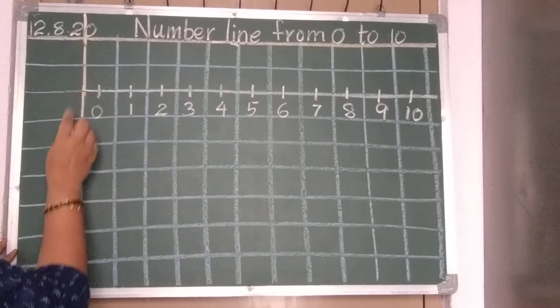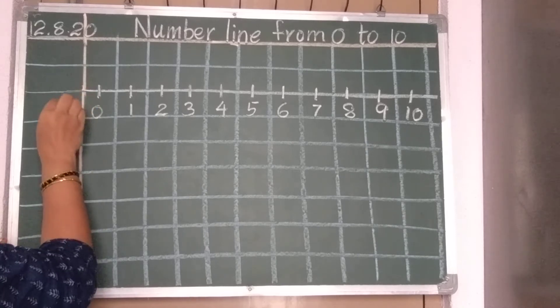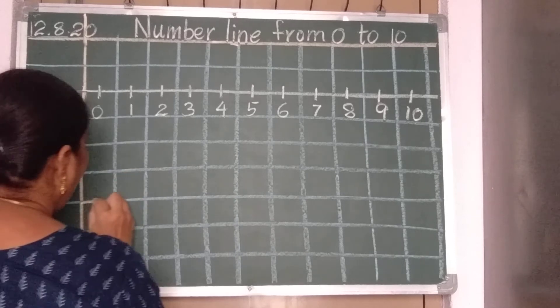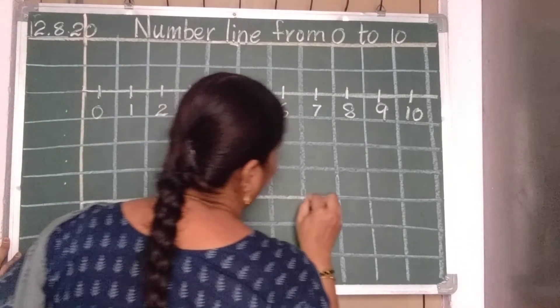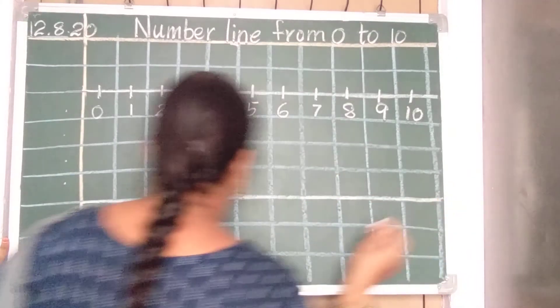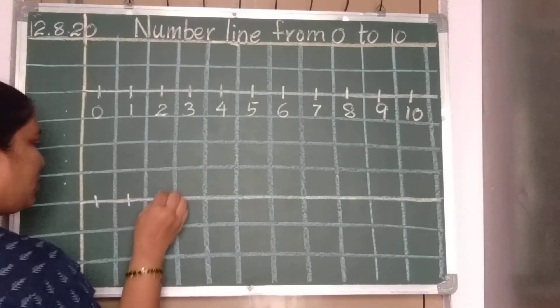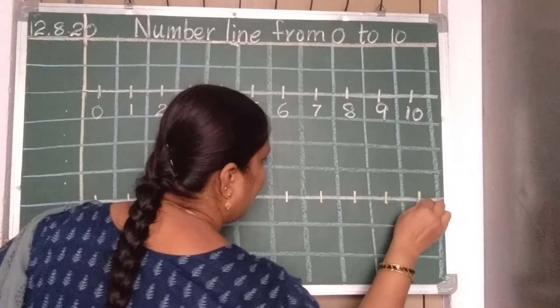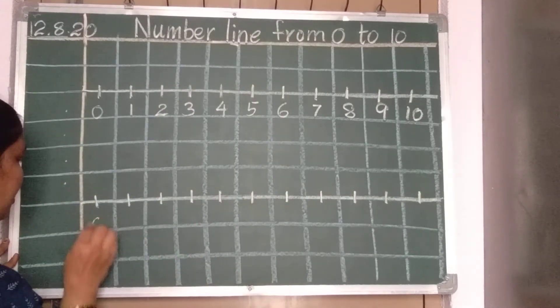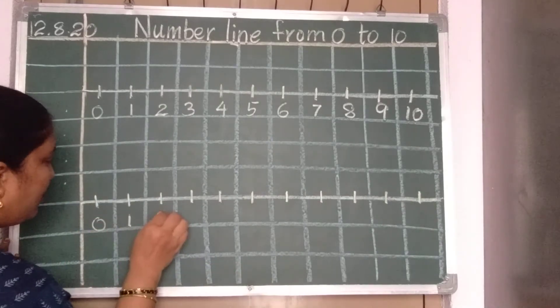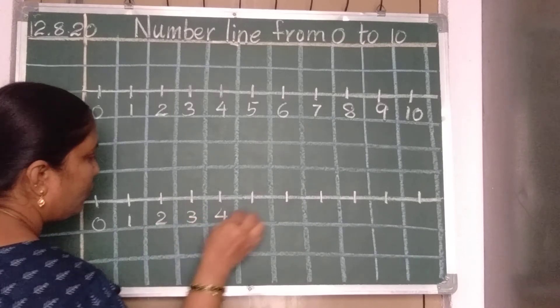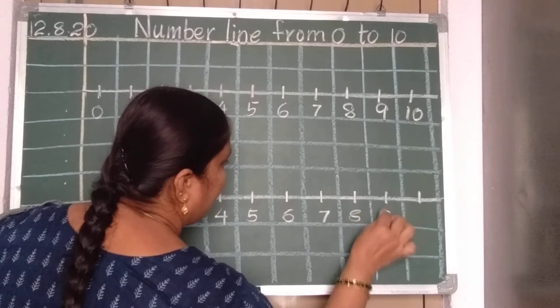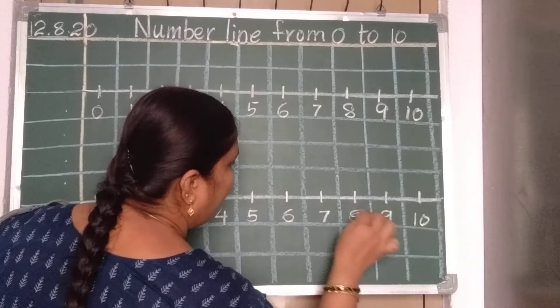See, here you have to draw the number line. After that, 1, 2, 3, 4 dots you keep. Again, same number line you should draw. In between the box, small small lines you should keep. And then you should write the numbers 0, 1, 2, 3, 4, 5, 6, 7, 8, 9, and 10.